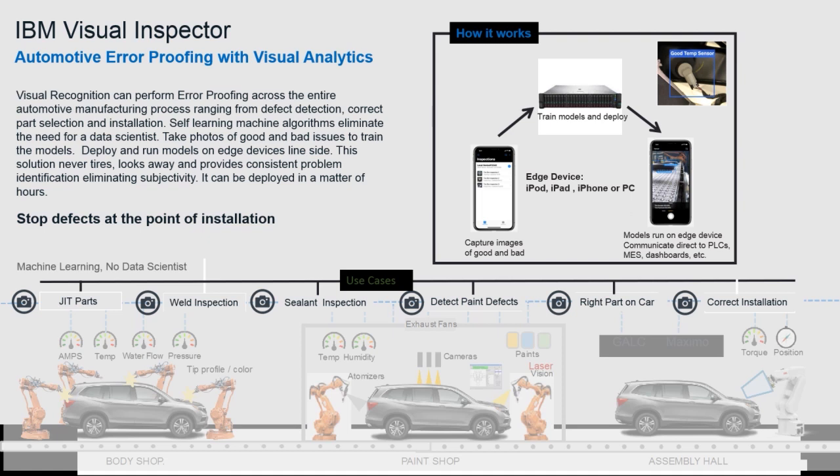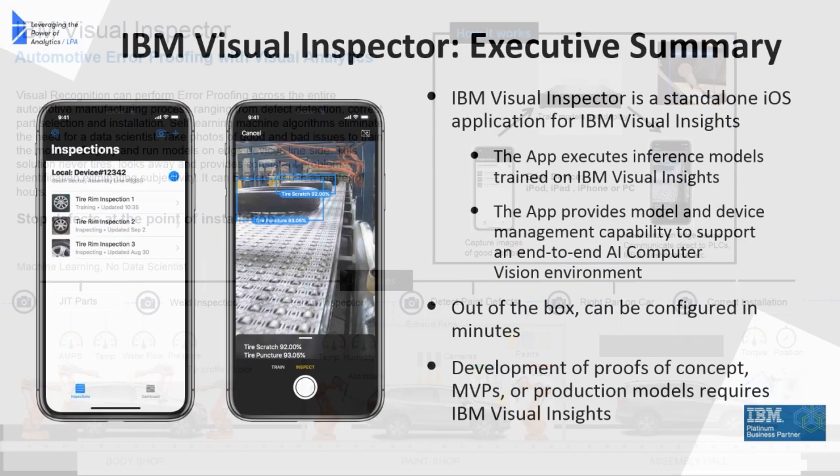That's the idea behind the right part on the right car — and there are analogies across other industries as well. As well as correct installation: do you actually have the part assembled correctly? Do you have a plug plugged in the right place? Is it seated completely? These are all things you can evaluate with visual inspection to determine whether something is correct or not.